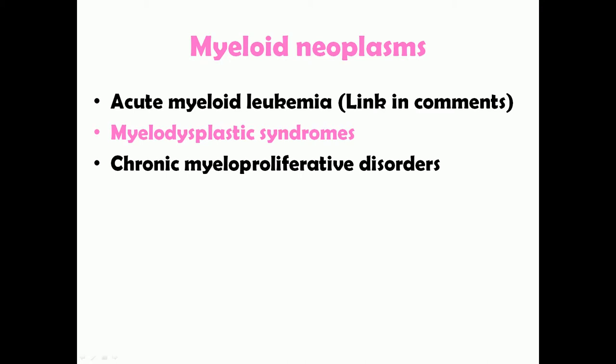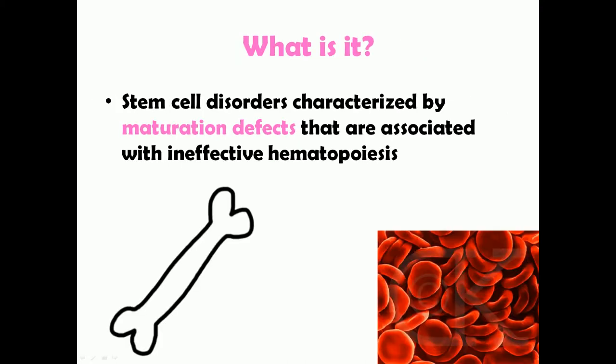So what are myelodysplastic syndromes? Myelodysplastic syndromes are stem cell disorders characterized by maturation defects associated with ineffective hematopoiesis. Precursor stem cells in the bone marrow need to mature into mature forms of WBCs or RBCs, but if maturation defects occur, hematopoiesis happens but the cells won't be effective enough to carry out their function.